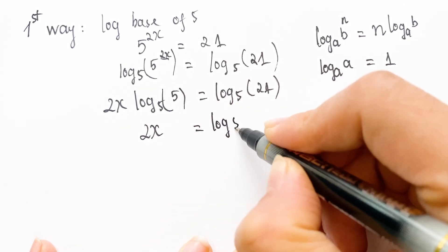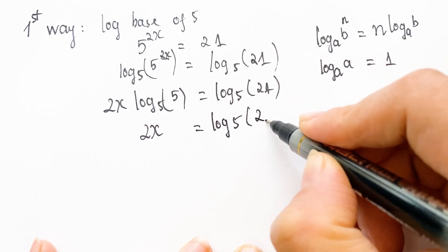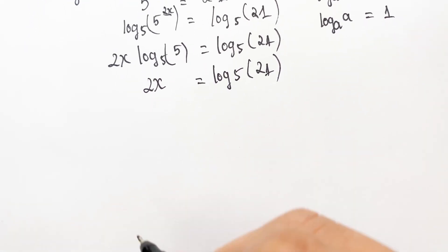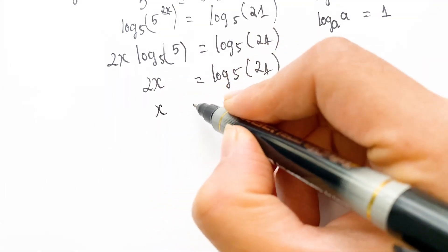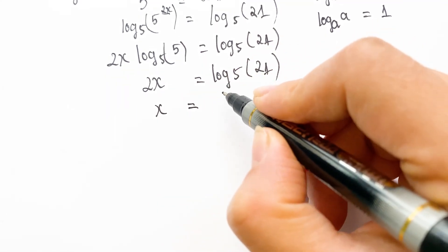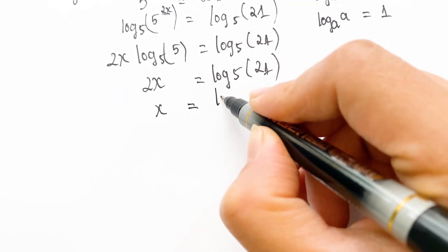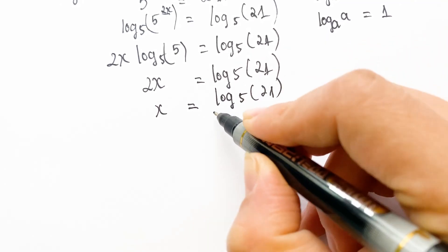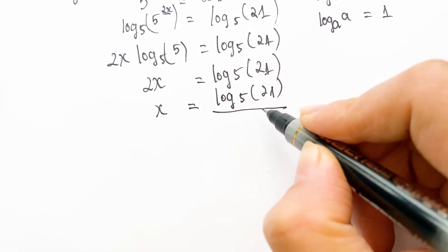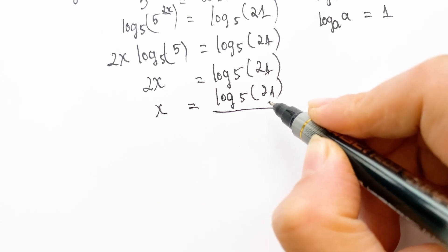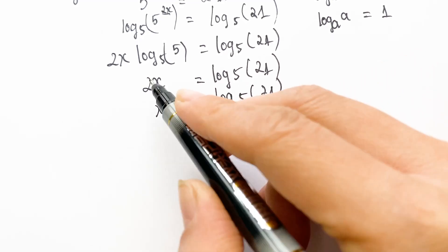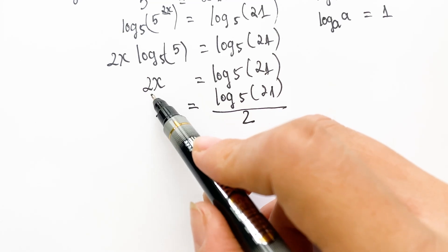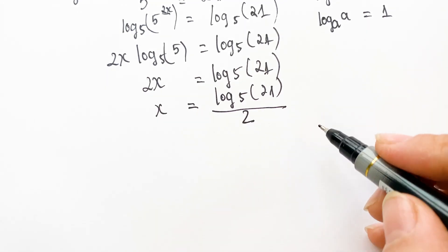So we get 2x equals log base 5 of 21. Therefore, x equals log base 5 of 21 over 2 — you divide both sides by 2.